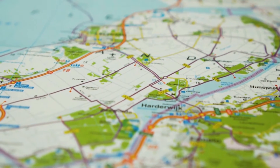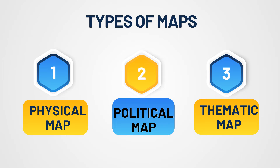There are many types of maps, each designed to convey different types of information. This video will cover three types of maps: physical maps, political maps, and thematic maps, each designed to highlight different aspects of geography.